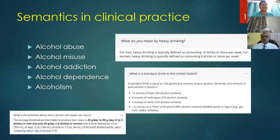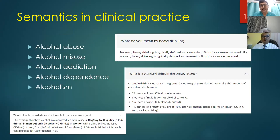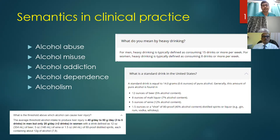Various terms are used to define alcohol intake impact — alcohol abuse, misuse, addiction, dependence, alcoholism. There are well-defined criteria about what constitutes heavy drinking in the United States. As clinicians, we are more interested in the threshold value of alcohol causing liver injury. The average threshold in males is 40-60 grams per day for at least 10-15 years to cause significant alcohol-induced liver injury. In women, the values are much less due to less alcohol dehydrogenase in the gastric mucosa, diverting more alcohol directly to the liver.